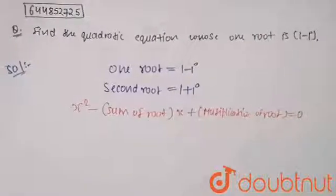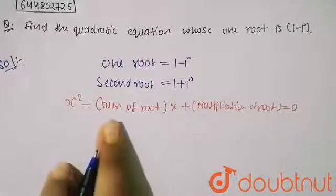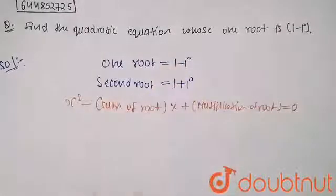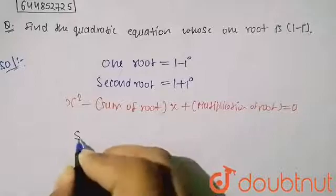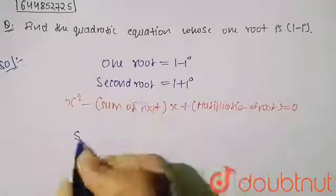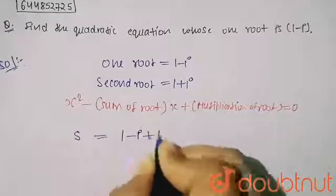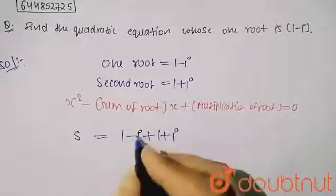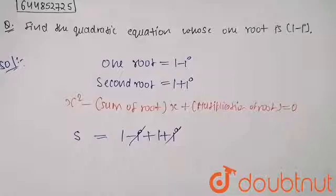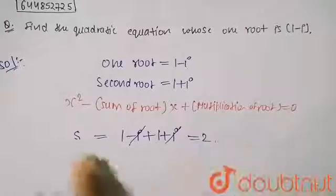So for finding the sum of roots, I have to add these two roots. For sum of roots, I am taking S. So it will be equal to (1-i) + (1+i). Your minus i and plus i will cancel, and you will get 2. So your sum of roots is equal to 2.